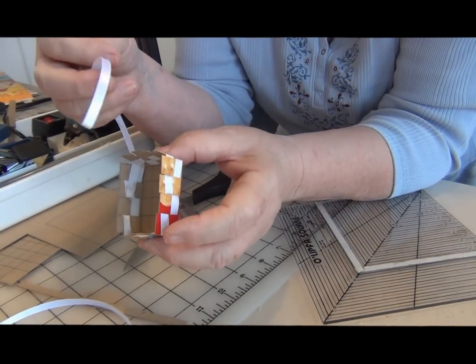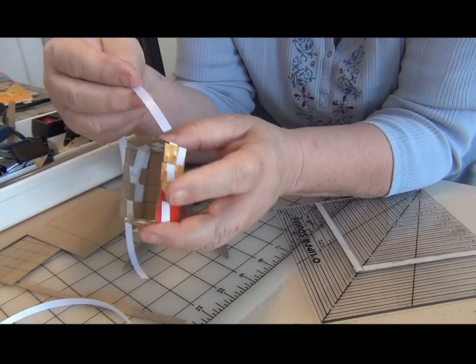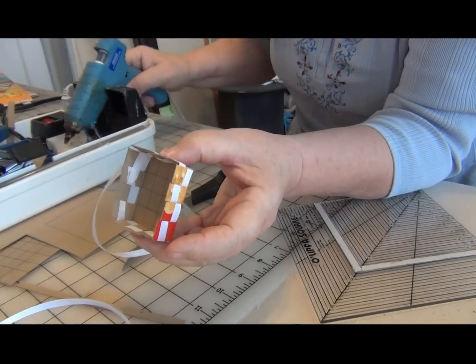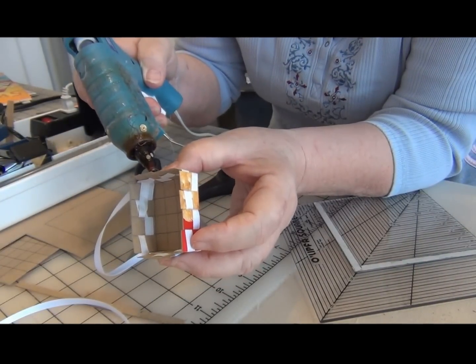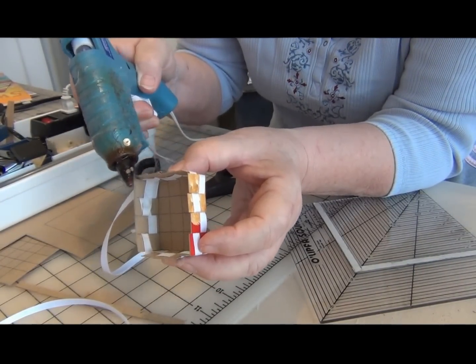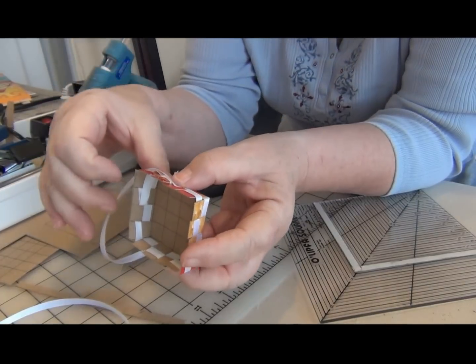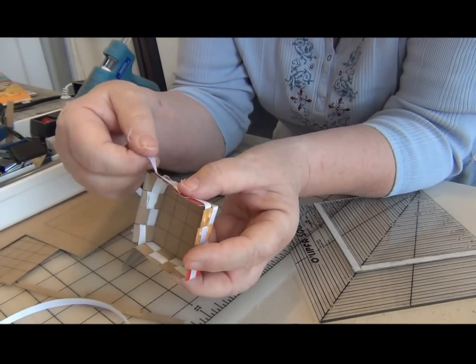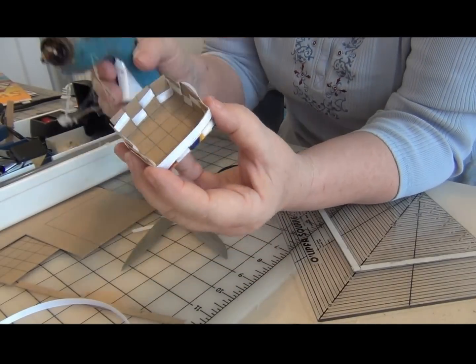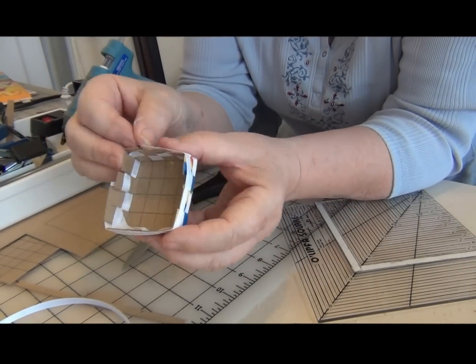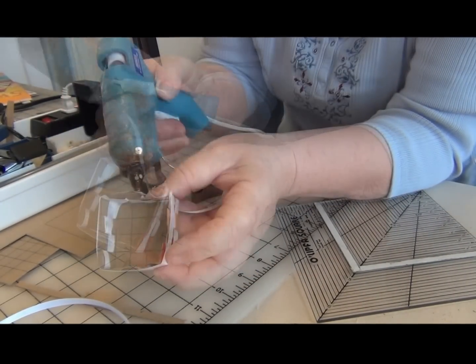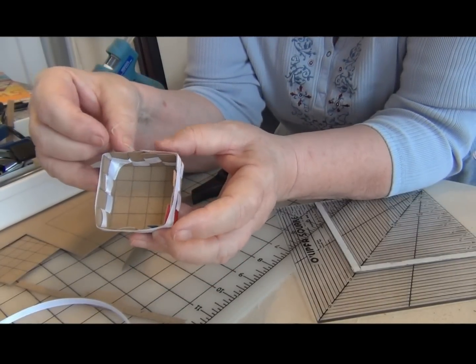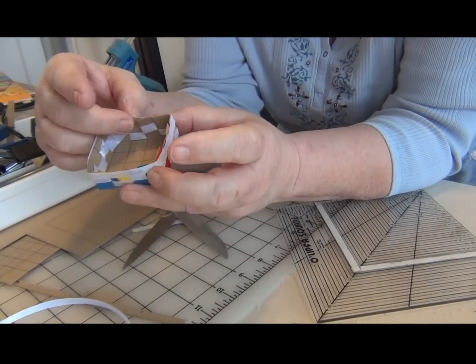Now with the third 12-inch piece of ribbon, this just gets glued all the way around the outside top. And I've got to the end, so just secure that a little bit with the glue. Basket's almost done.